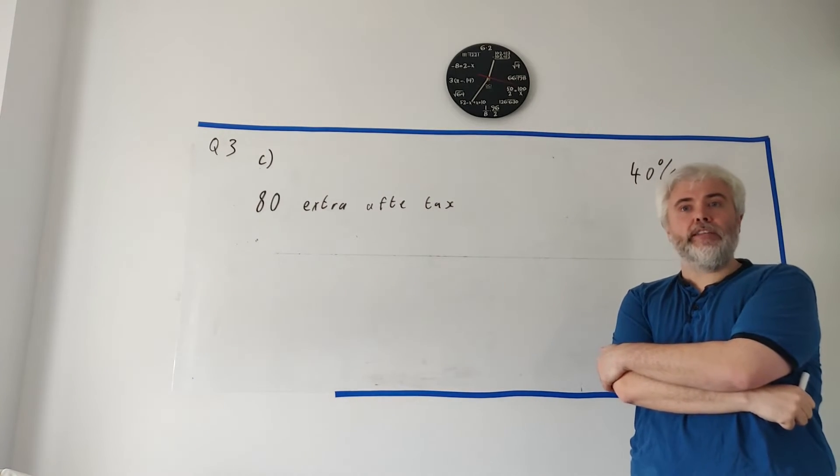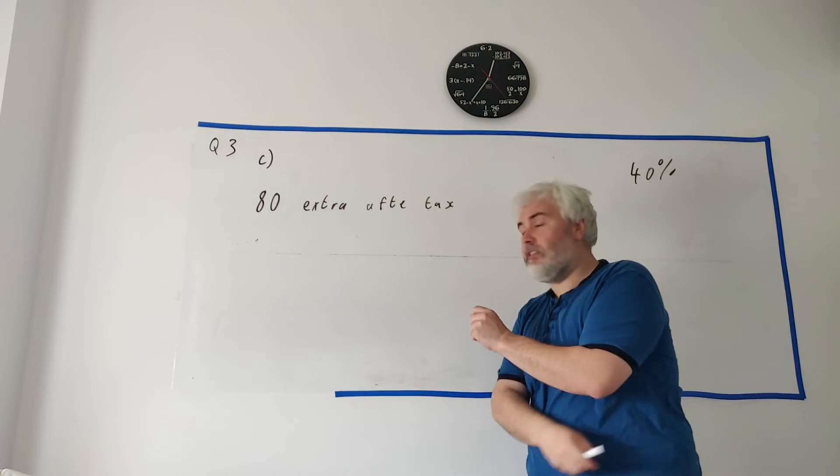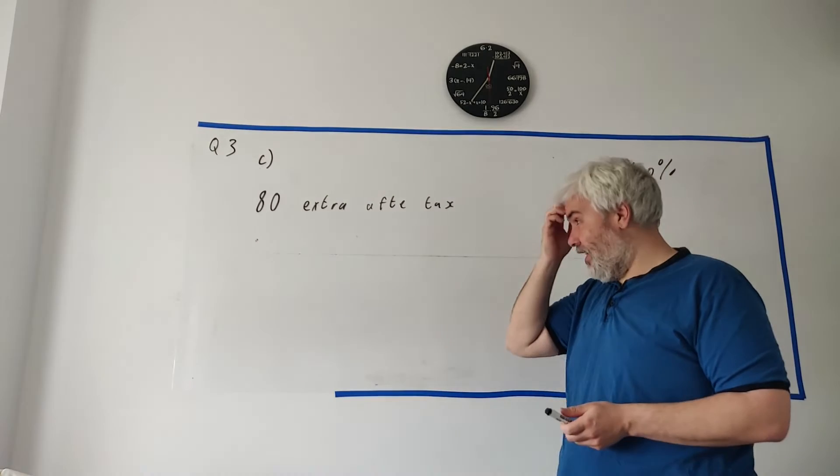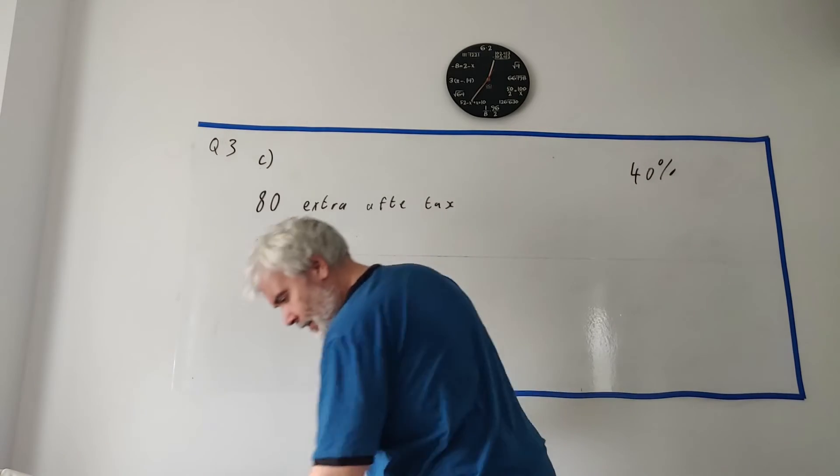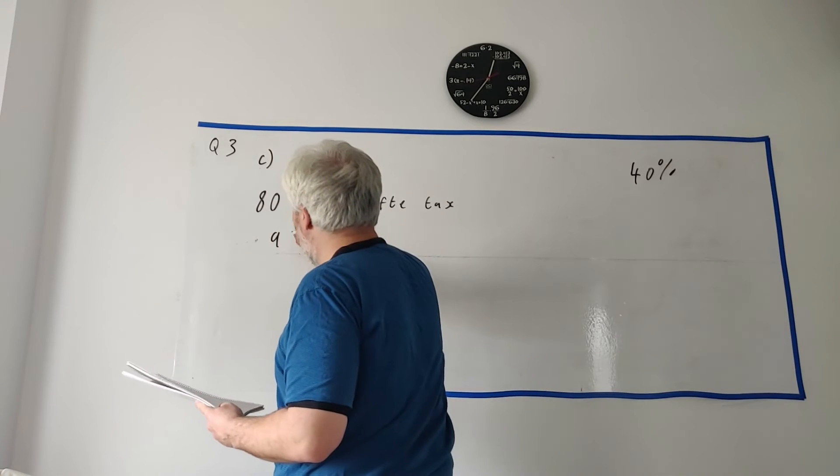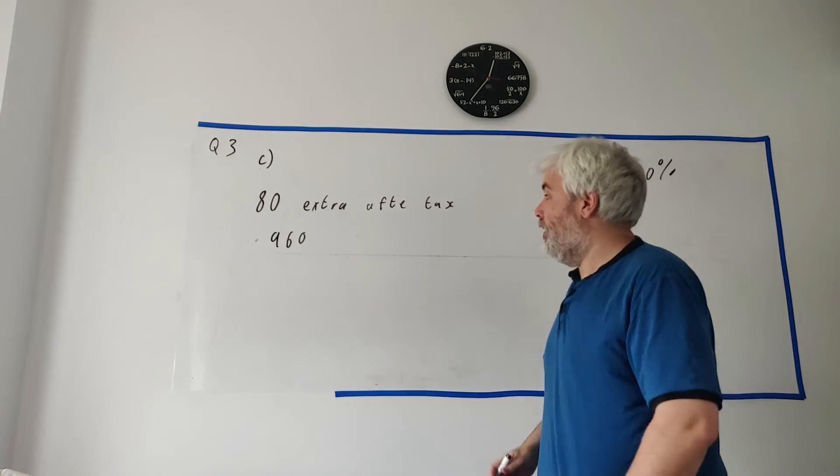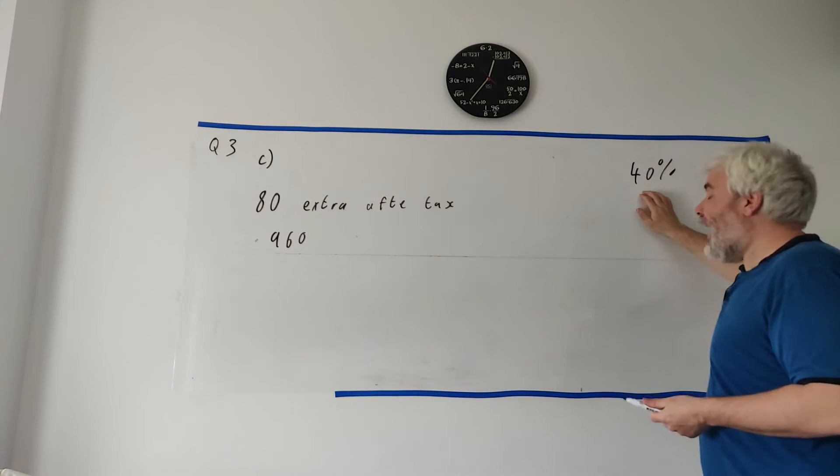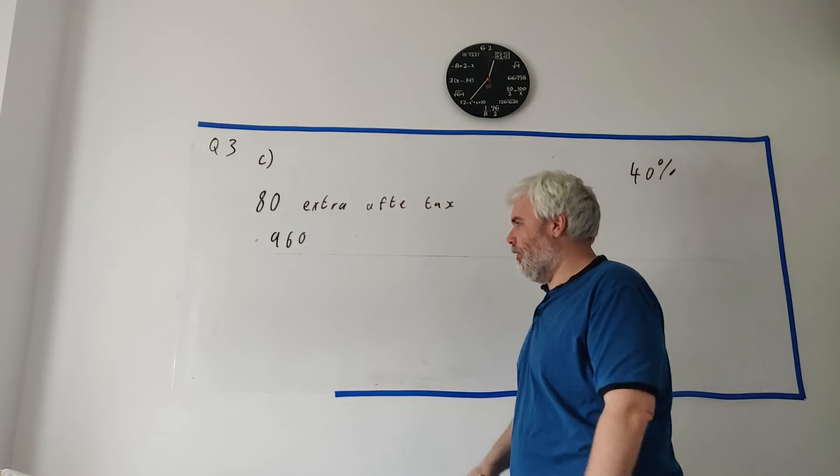Way is looking for a pay rise. She wants her net income, so after tax, to increase 80 euro a month. So first thing we actually need to do is turn 80 a month into how much in one year, and that is 80 times 12. That is 960. She wants this much of a pay rise after tax. So there's a few ways to do this. After paying 40%, she wants this amount. So how I would do it, I'll show you a couple of ways.